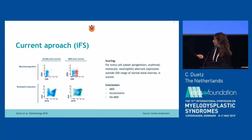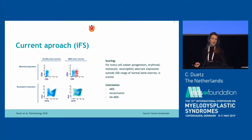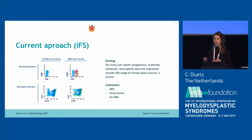Here you see healthy myeloid progenitors, and here you see MDS myeloid progenitors. On the MDS myeloid progenitors you can see CD5 expression, which is a lymphoid marker, and that's aberrant. You also see the neutrophil maturation, and here you see some loss of CD11b. There are multiple markers that are discriminative between healthy and diseased bone marrow, and we score it using a 2SD range of normal bone marrow, getting a conclusion of either MDS, no MDS, or indeterminate.